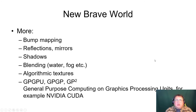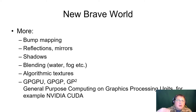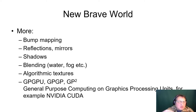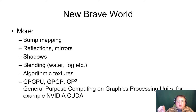Here you can see some special effects you can implement using shaders — this is just a short selection: bump mapping, reflections, mirrors, shadows, blending used in water rendering, fog rendering, algorithmic textures, and something called GPGPU — General Purpose Computing on Graphics Processing Units. This is, for example, NVIDIA's CUDA technology.